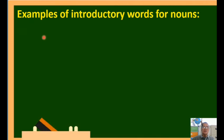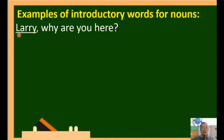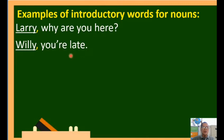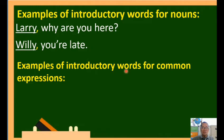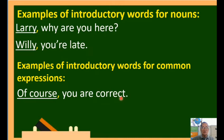Introductory nouns also take a comma. Examples: 'Larry, why are you here?' After the noun 'Larry,' we use a comma then a space. 'Willy, you're late.' After the noun 'Willy,' we use a comma. For common expressions: 'Of course, you are correct.' The expression 'of course' is followed by a comma and a space before the rest of the sentence.